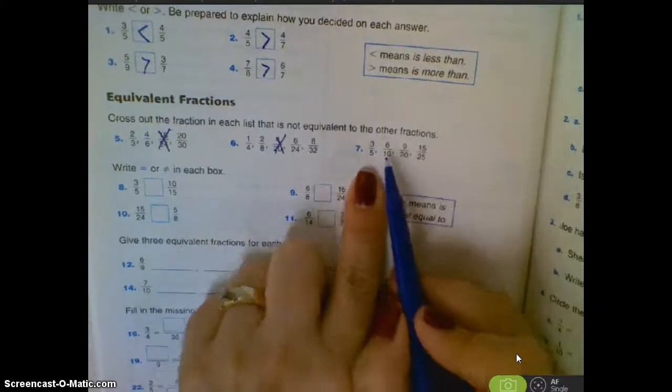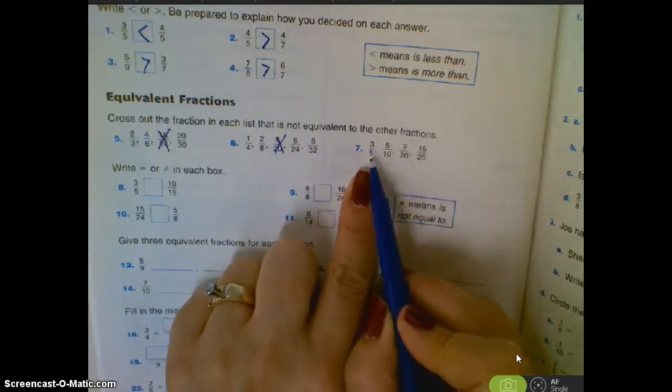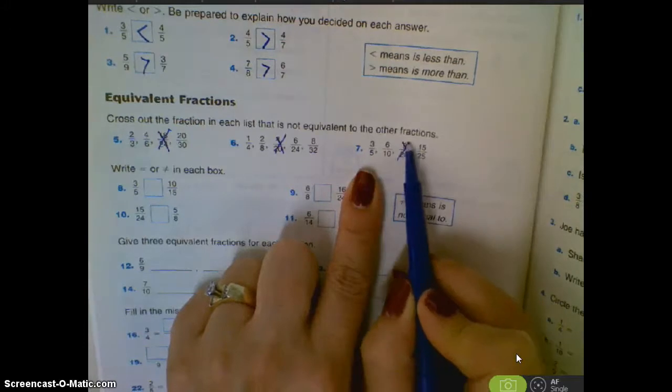This one, if we multiply it by two, three-fifths times two over two would be six-tenths. To get 20, it must be times four. So five times four is 20.